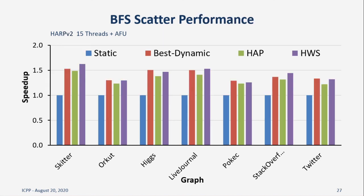To show that these measurements can be translated into performance, we show the relative speedup achieved by each of the schedulers compared to the static scheduler. The difference in load balancing capabilities manifests into performance improvements, as HWS consistently outperforms static by up to 60%, HAP by up to 10%, and in some cases outperforms best dynamic by up to 6%. This is for BFS, but we achieve similar results for SSSP and PageRank, where we achieve up to 17% better performance versus HAP.